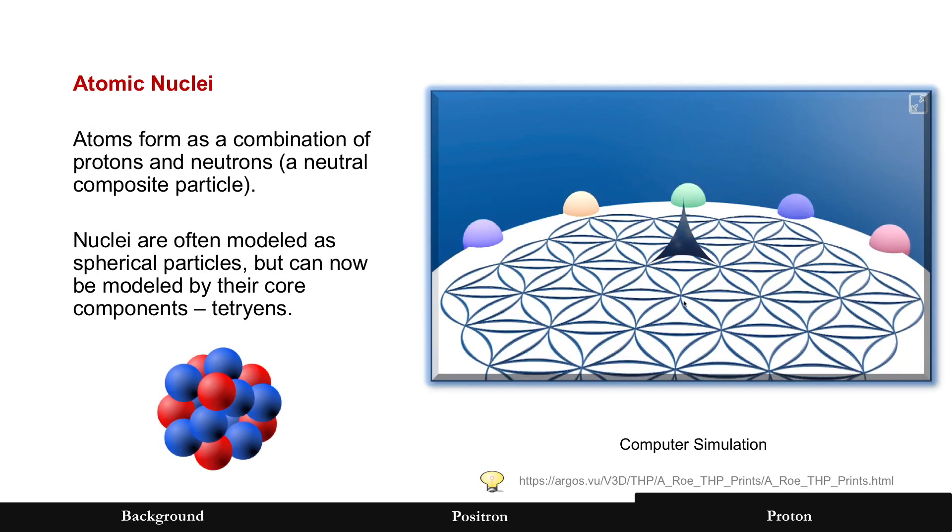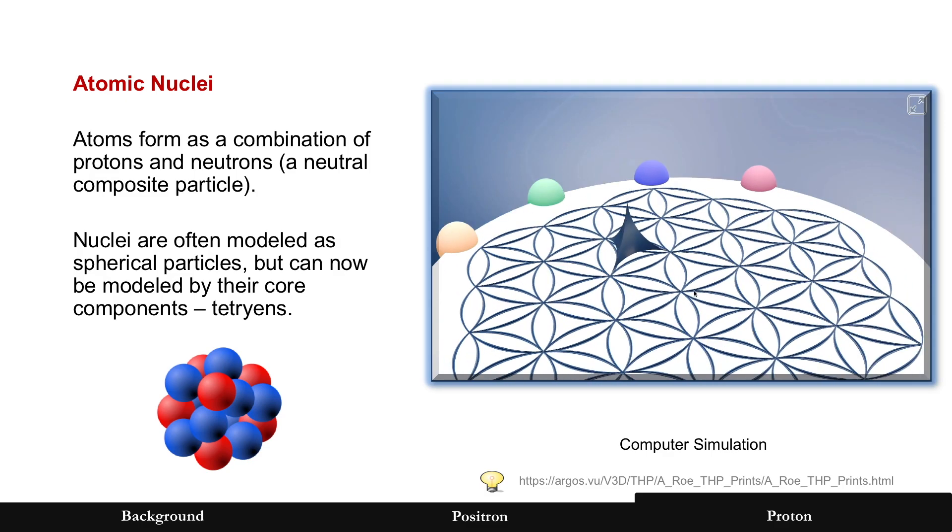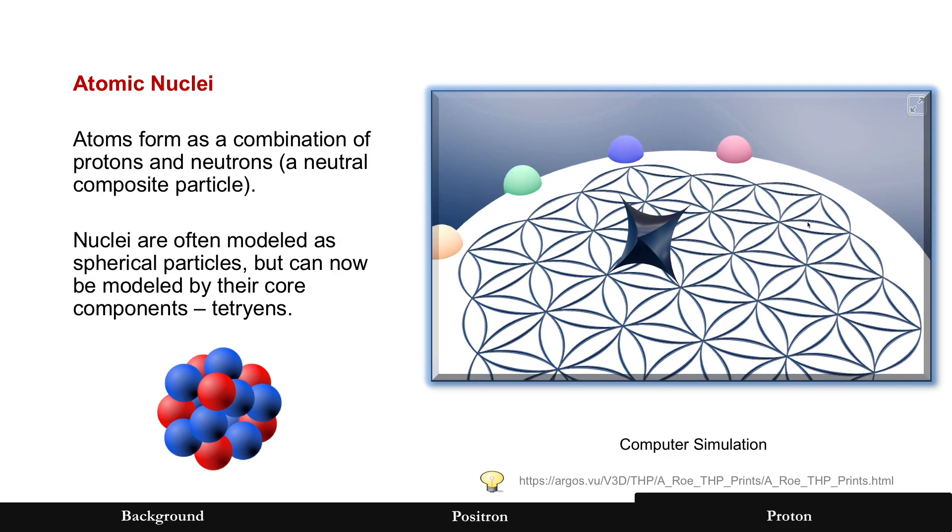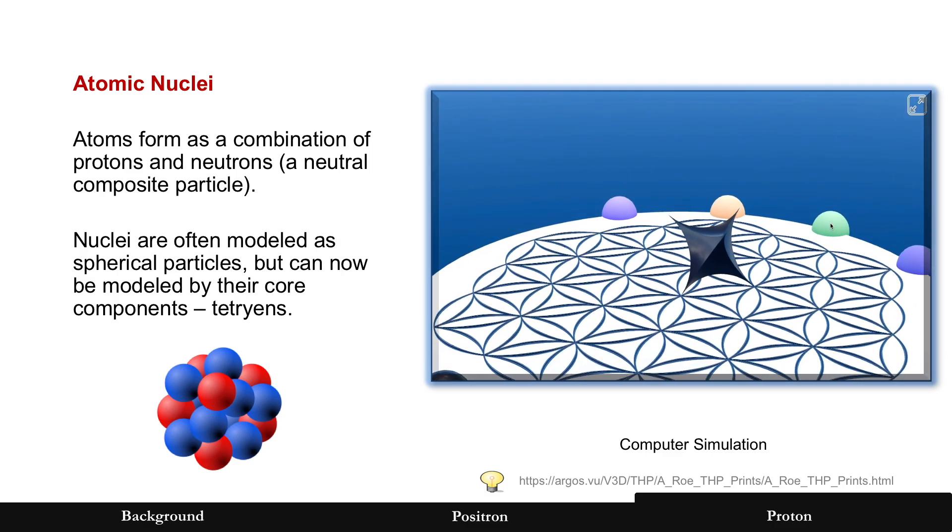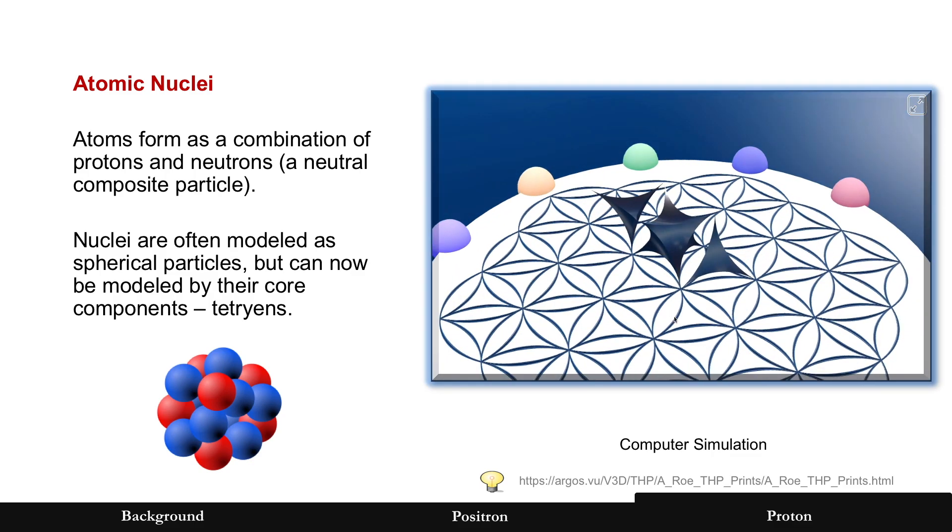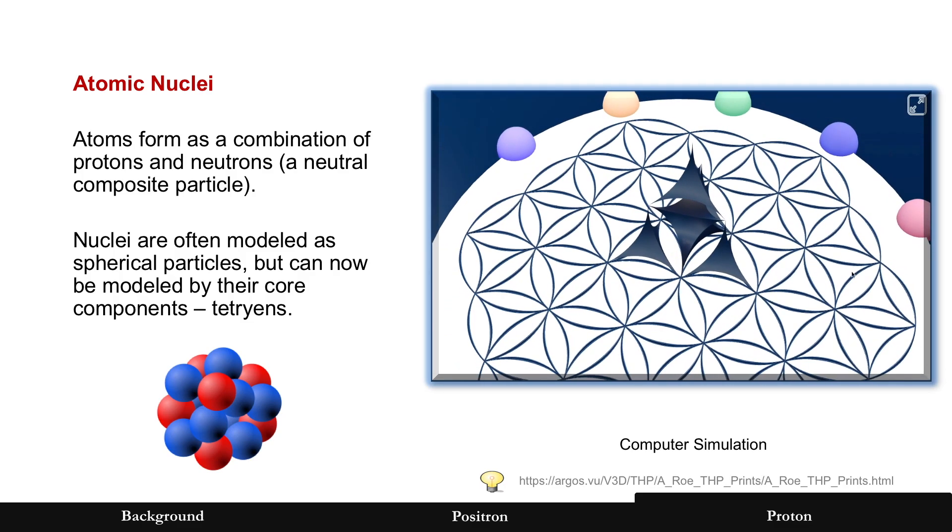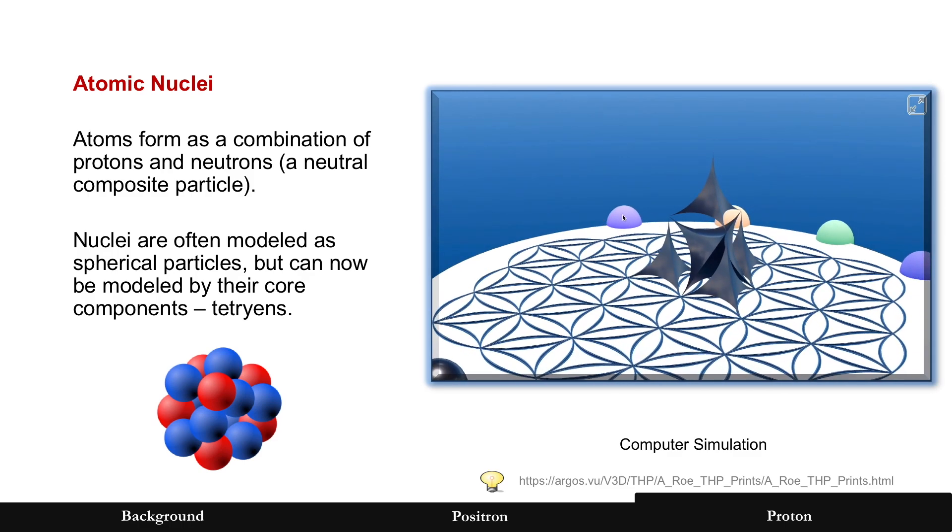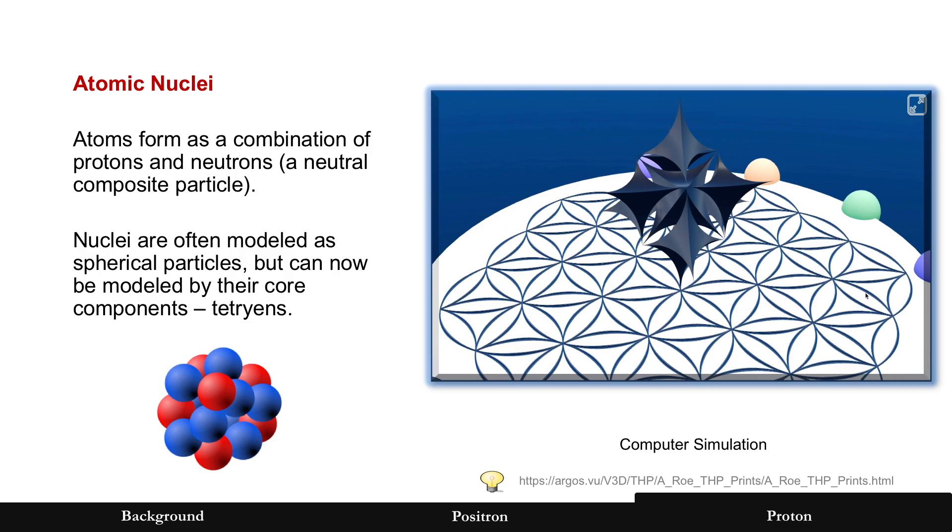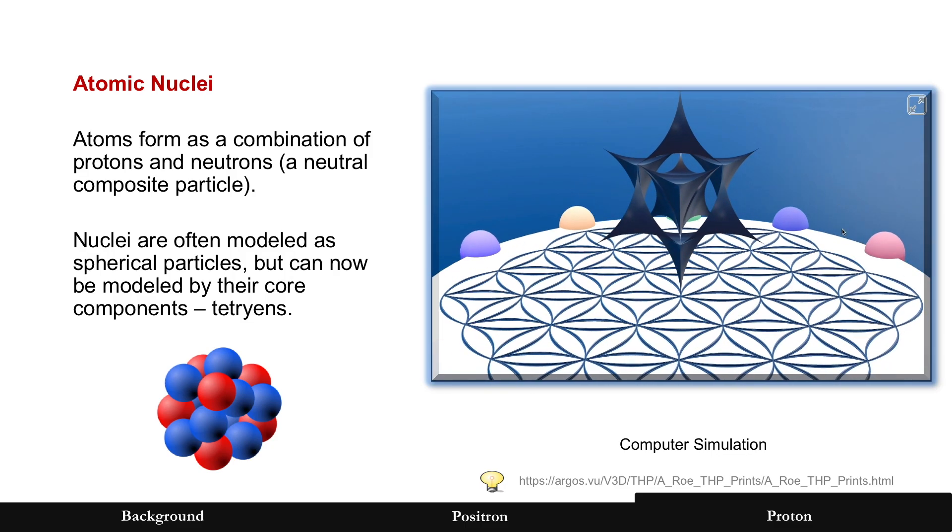So the reason why that could be helpful is this: atomic nuclei. Atoms form as a combination of protons and neutrons. And neutrons are also a composite particle, almost identical to a proton in structure, but just neutral. And nuclei are normally modeled as spherical particles. But now imagine this. Let's run that computer simulation, thanks to Terence Howard. See that tetrahedron? And now different formations of tetrahedron. Spherical particles would still need to be in place, but just imagine now this being the core and you can envision different atomic nuclei. There is another stable tetrahedron with something in the middle. So this could very well help us to model what atomic nuclei look like and why certain nuclei are more stable than others.